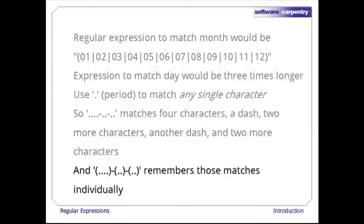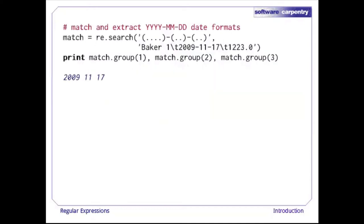If we put each set of dots in parentheses, we get three groups recording the year, month, and day every time there is a successful match. We call re.search with that pattern and print out match.group(1), match.group(2), and match.group(3). Sure enough, we get 2009, 11, and 17, just as we wanted.